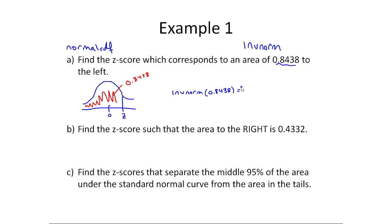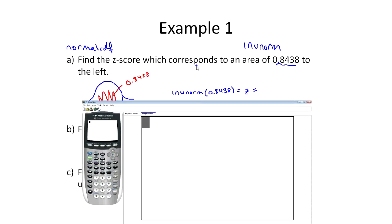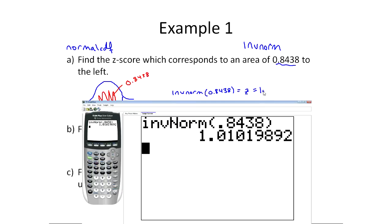When I do this, I'll get z. On the calculator, this is under the same menu as normal CDF. I'm going to press the second DISTR button, and that'll get me into the distributions menu, and it's right at the top, inverse normal. Once I click that, I can just type 0.8438 and press enter, and I get a z-score of 1.01.